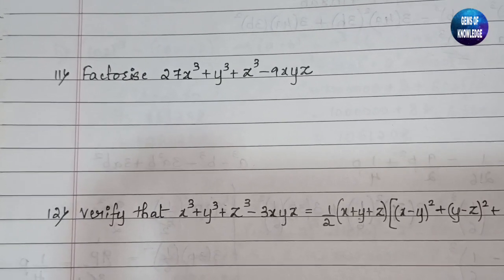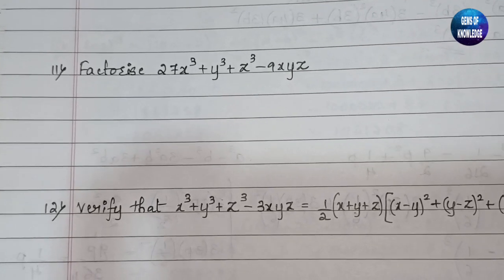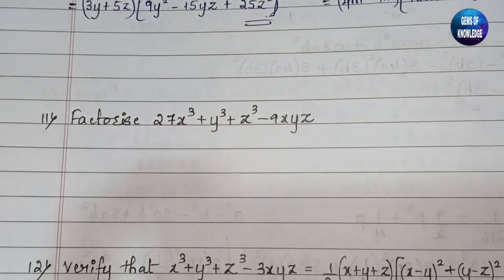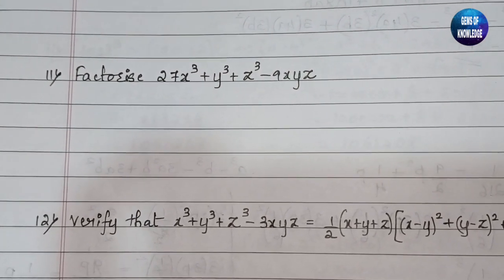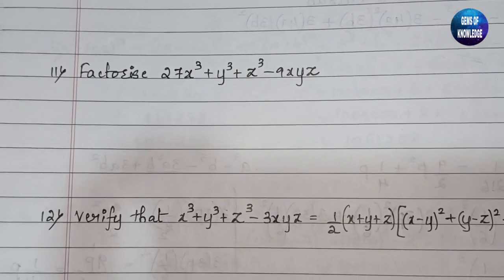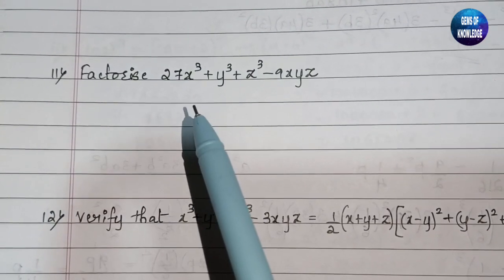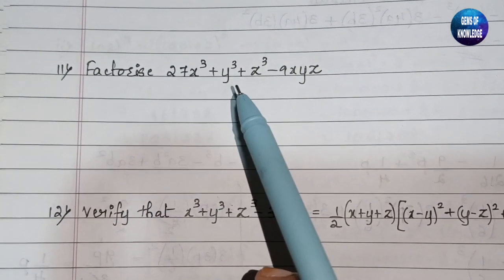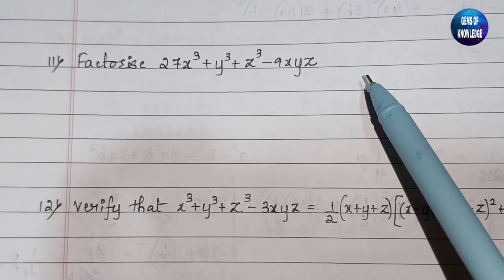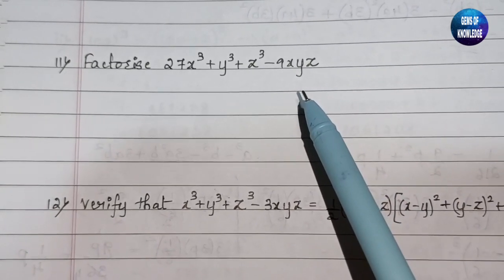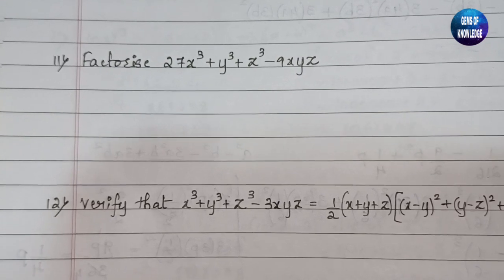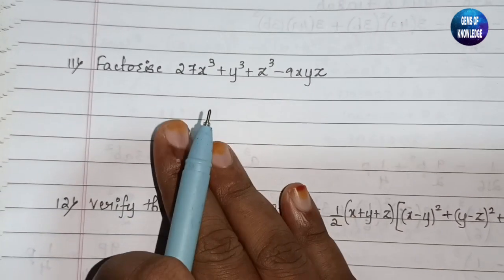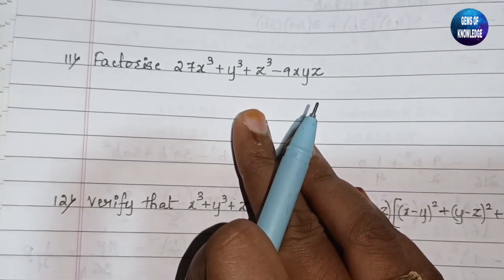Hello everyone, welcome back to my channel Gems of Knowledge. In my previous video we dealt up to question number 10. In today's video we are going to deal with question number 11 from the chapter Polynomials, Exercise 4.5. The question is: factorize 27x³ + y³ + z³ - 9xyz. Before starting, make sure to subscribe to my channel and click on the bell button to get notifications.